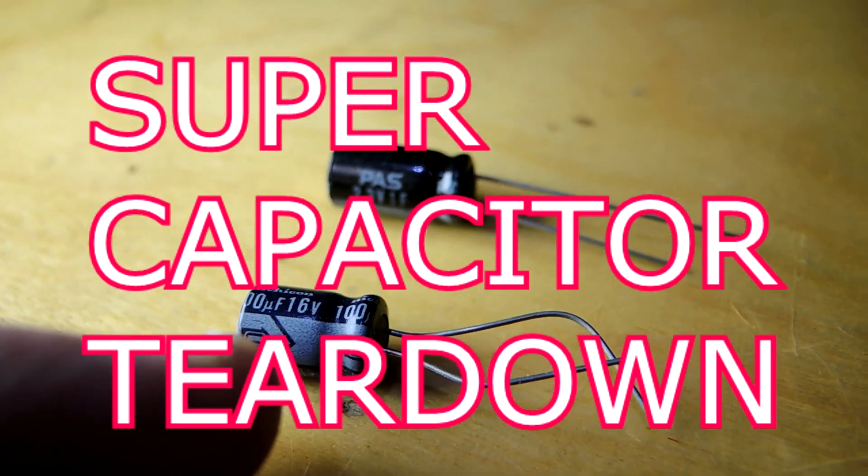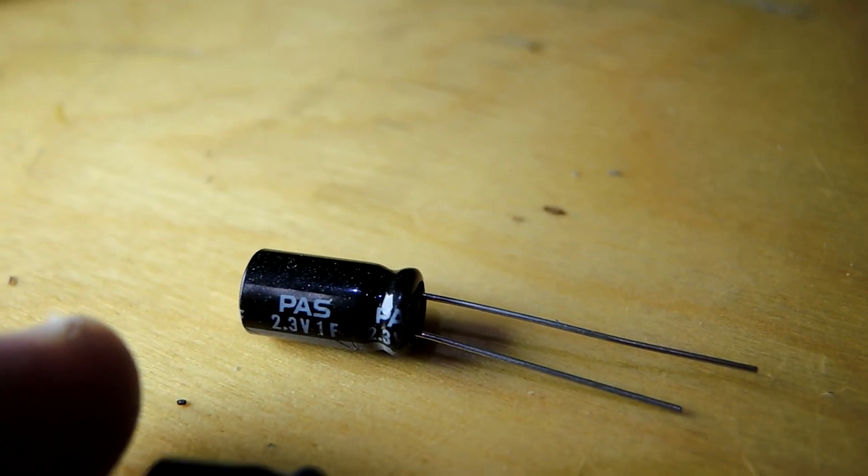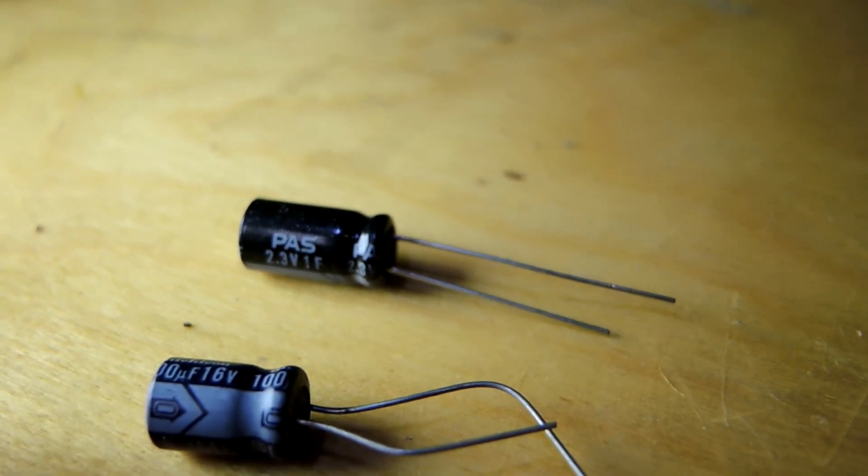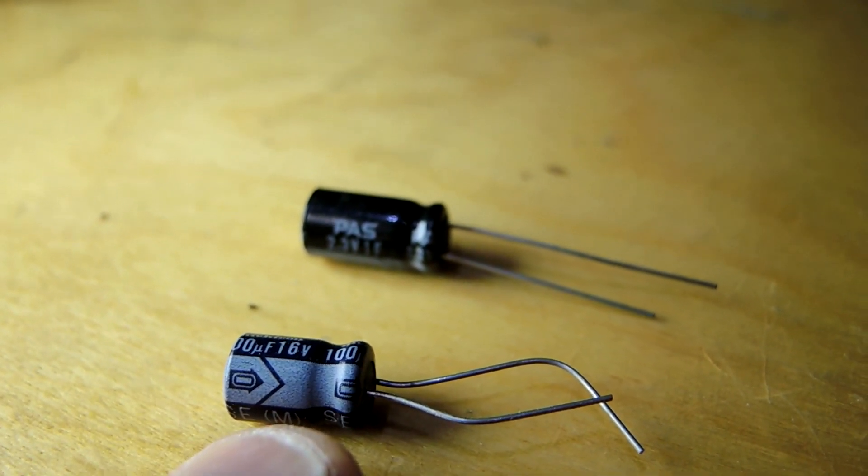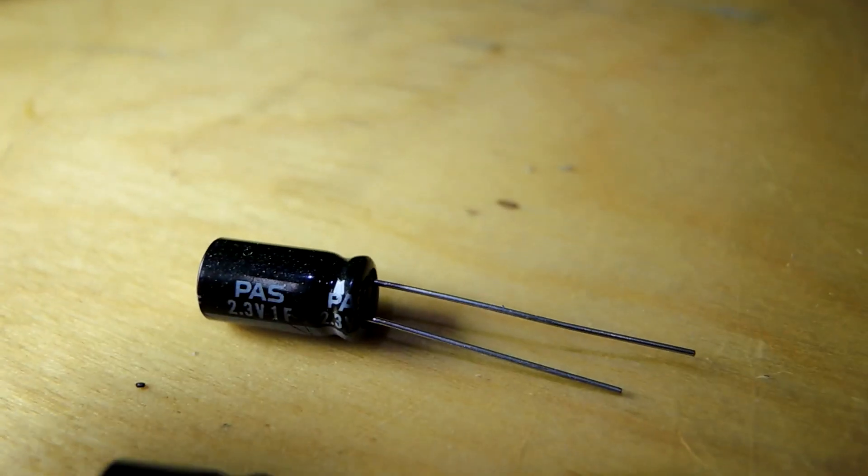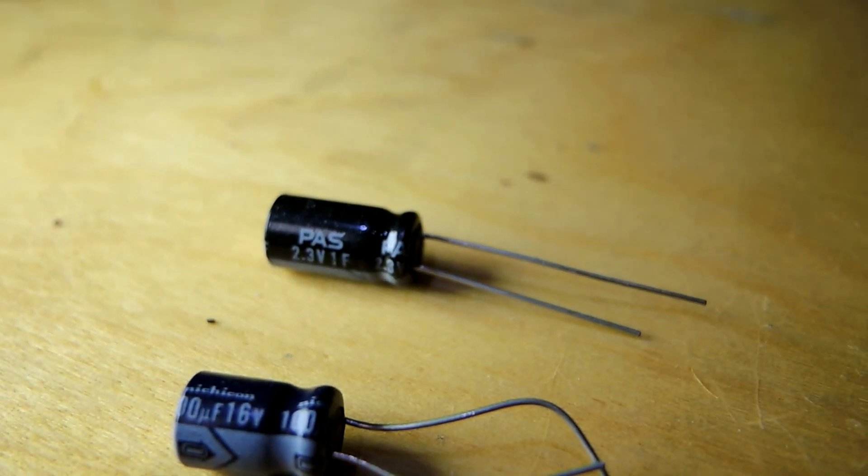Recently I was tearing down an electrolytic capacitor and one of the readers was wondering what a supercapacitor looks like, thinking it might be quite a bit different. For example, this capacitor in the foreground here is a standard electrolytic 100 microfarads. Behind it is a 1 farad capacitor and you can see physically they're about the same size.